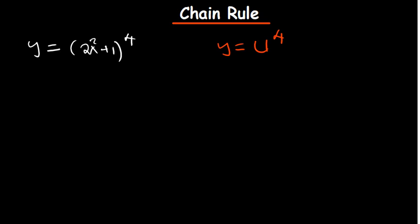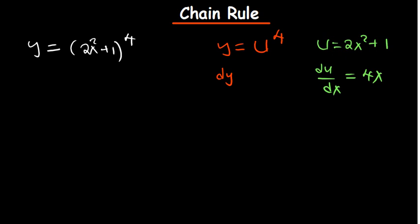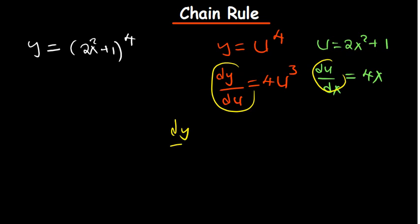The way we work through this: u is equal to 2x squared plus 1, so differentiating that gives du/dx equal to 4x. We also differentiate the part where we substituted u, so dy/du gives us 4u to the power 3. Now, if you multiply the two — dy/du multiplied by du/dx — the du's cancel out and you remain with dy/dx.